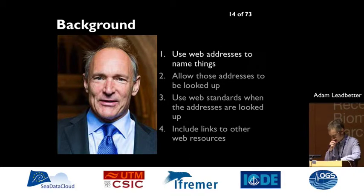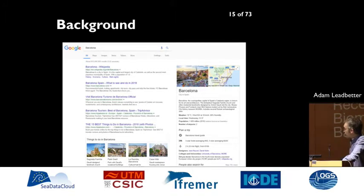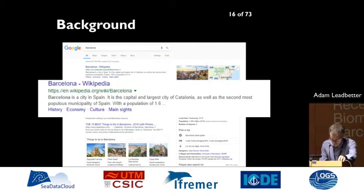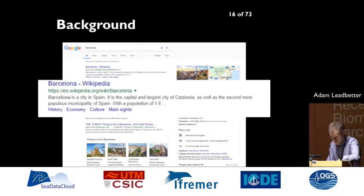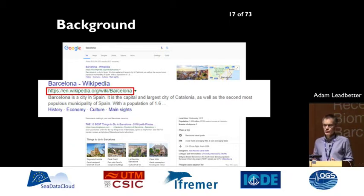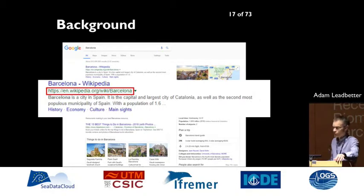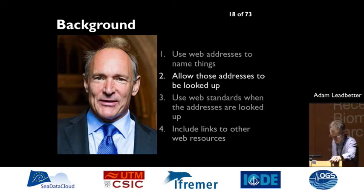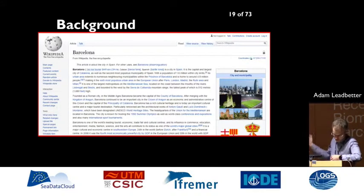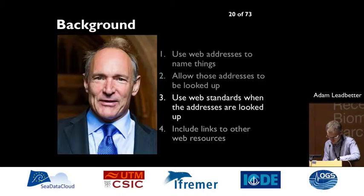The first thing is that you use web addresses to name things. If you go online and search for Barcelona in your favourite search tool, the first hit — certainly from the Irish version of Google — is the Wikipedia entry for Barcelona, which has a very nice clean web address used to identify all of the information on that page. One of the things you really want to do is make these addresses quite clean so they're understandable and easily reused. The second thing is to make these addresses so that you can look them up — you go to that HTTP address and look it up using your web browser.